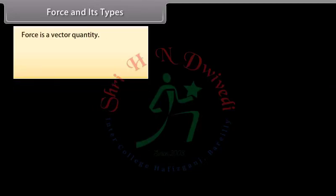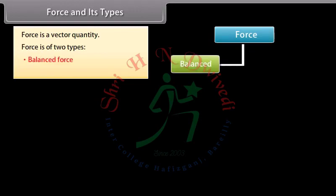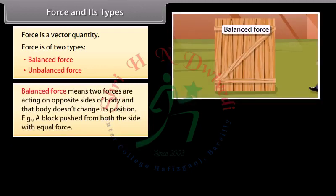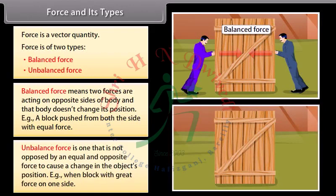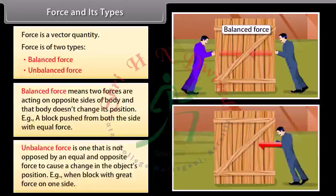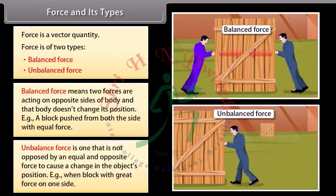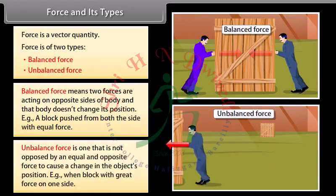Force is a vector quantity. Force is of two types: balanced and unbalanced. Balanced force means two forces are acting on opposite sides of the body and that body does not change its position. Example: a block pushed from both sides with equal force. Unbalanced force is one that is not opposed by an equal and opposite force to cause a change in the object's position. Example: when block with great force on one side.